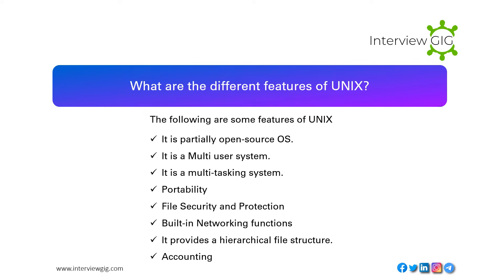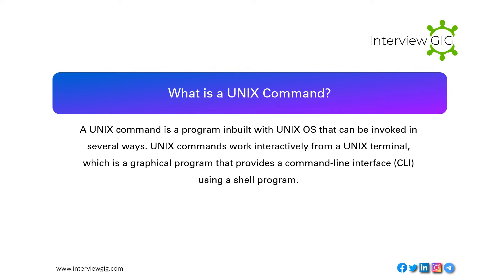What are the different features of Unix? The following are some features of Unix: it is partially open source, it is a multi-user system, it is a multitasking system, portability, file security and protection, built-in networking functions, it provides a hierarchical file structure, and accounting.